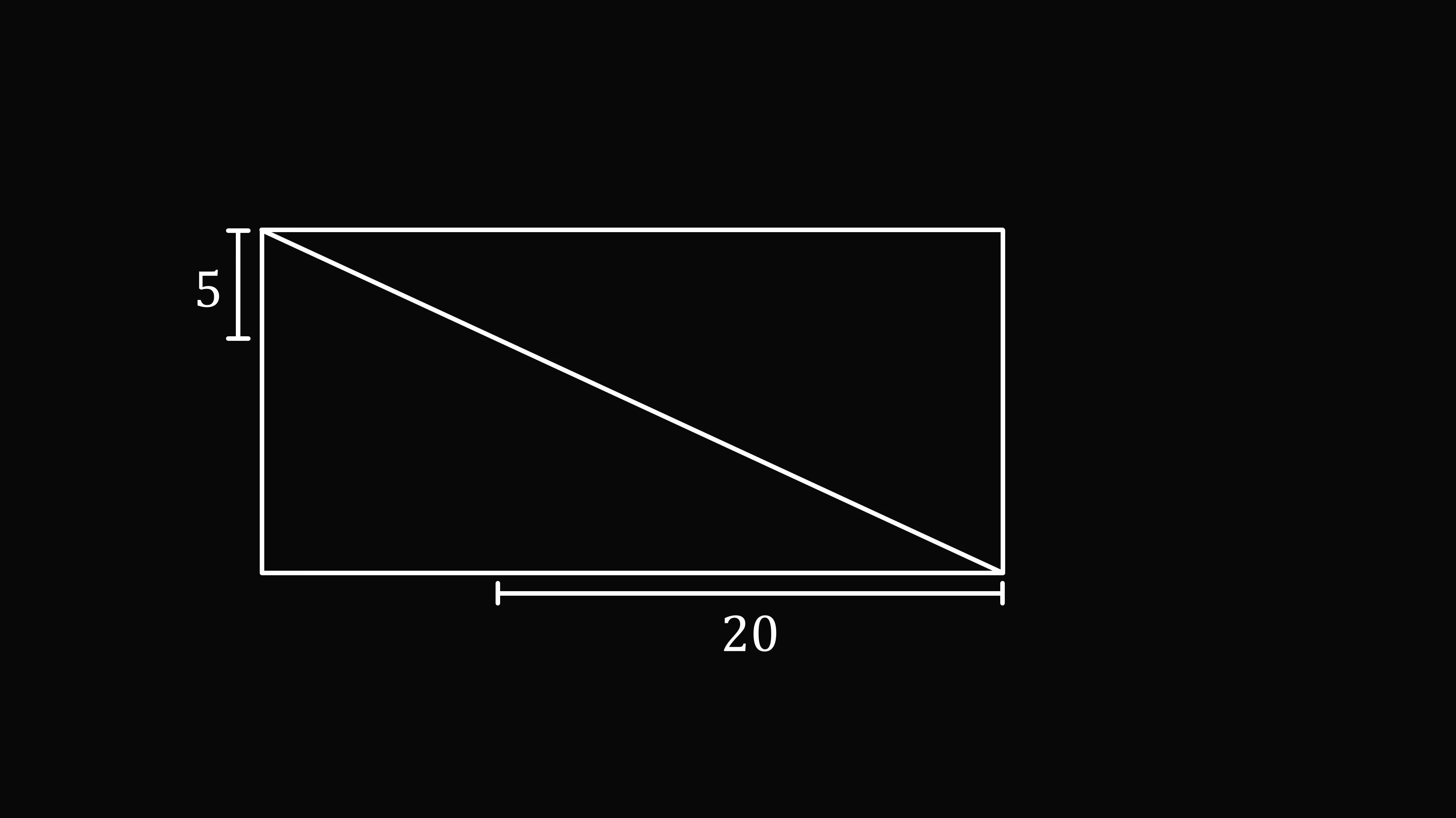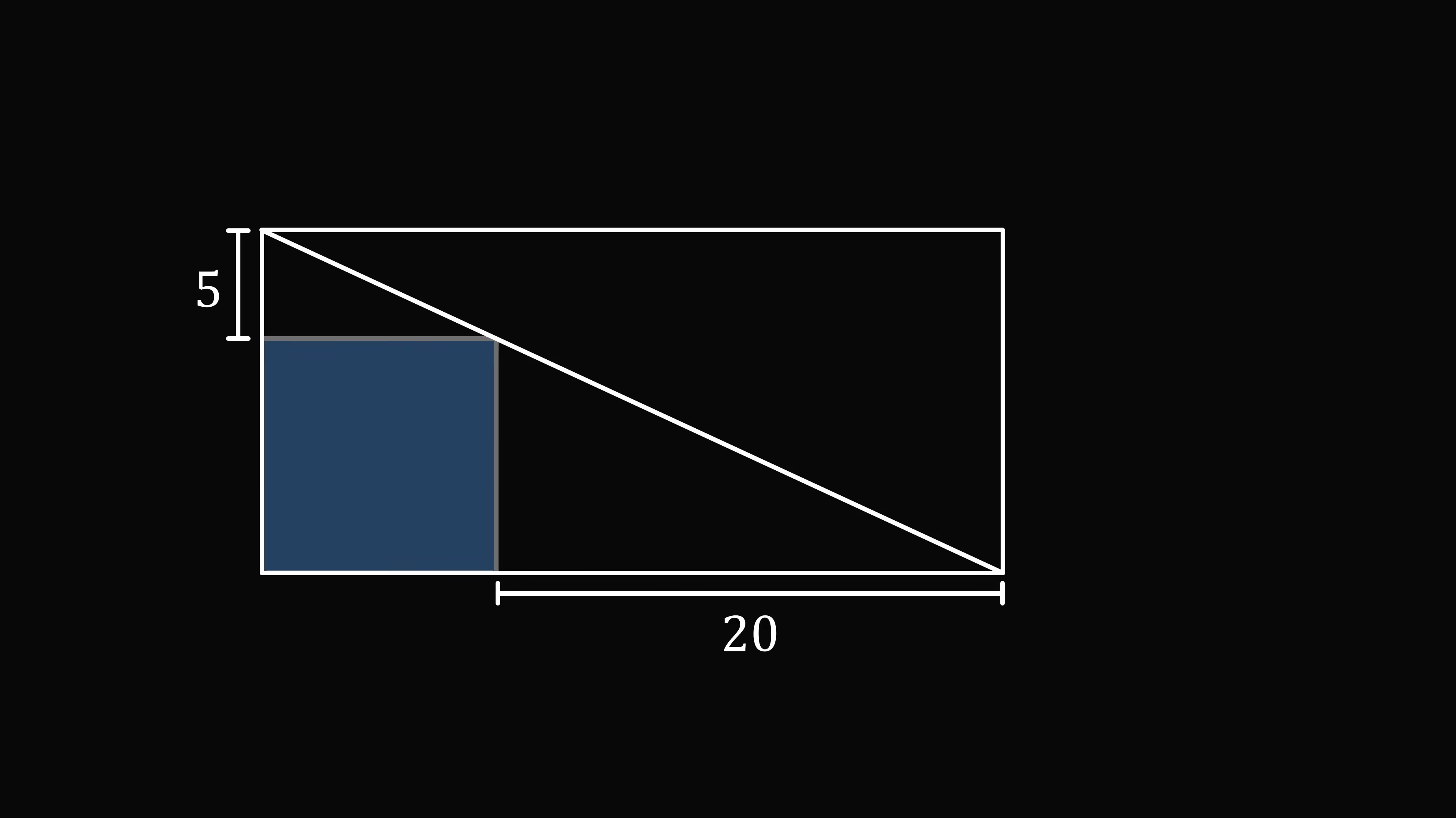We can then form a rectangle. Now if we just look at this rectangle, it's divided into two equal triangles. So these two triangles have the same area. Now what happens when we put this square here? Let's extend this horizontal line.